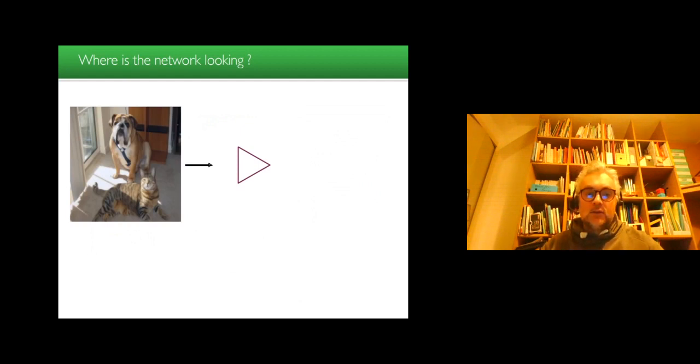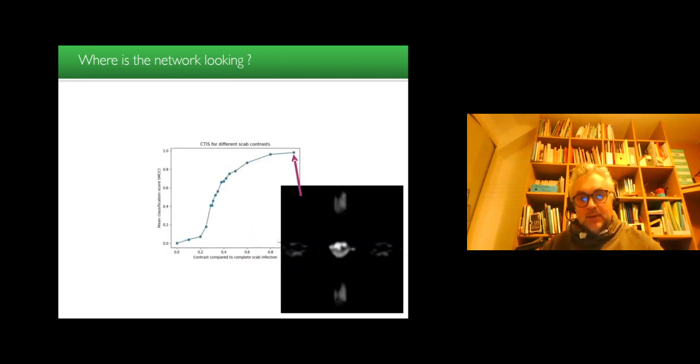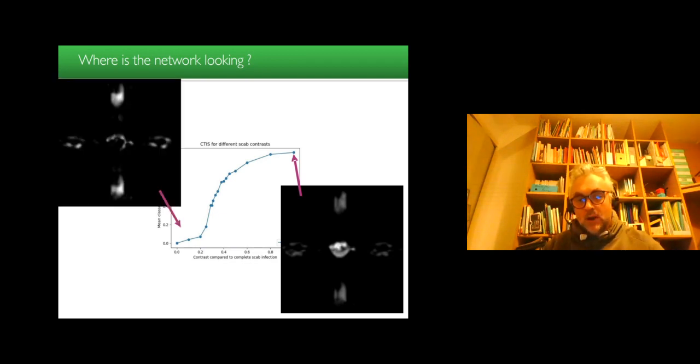More interestingly, we had a look at where the network is looking at by using the so-called GradCAM visualization algorithm. And it happened that for the high contrast, the network is looking at the spatial information, while for the low contrast, the network is more looking at the spectral information, which makes sense in this case and which is an interesting feature to check that the network is doing something meaningful in this case.